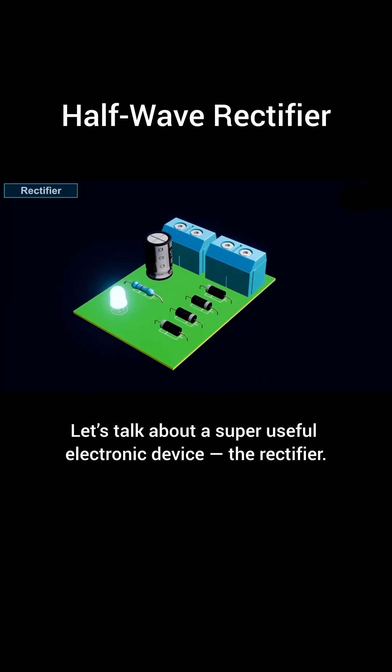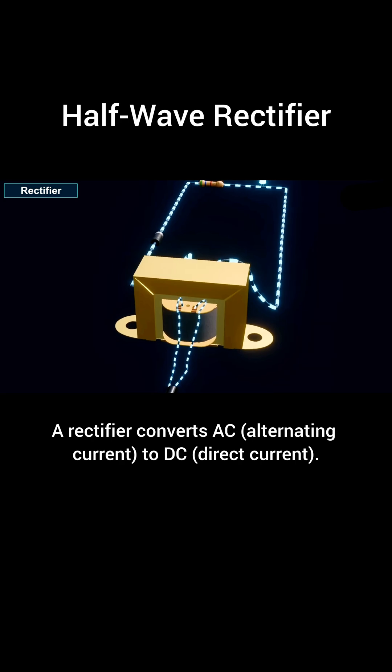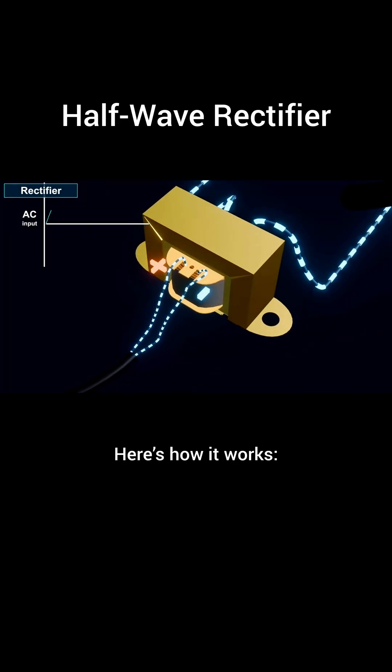Let's talk about a super useful electronic device, the rectifier. A rectifier converts AC (alternating current) to DC (direct current). Here's how it works.